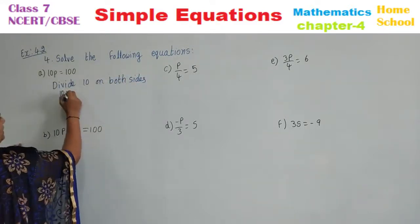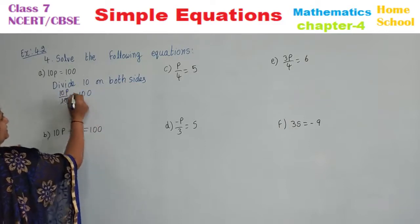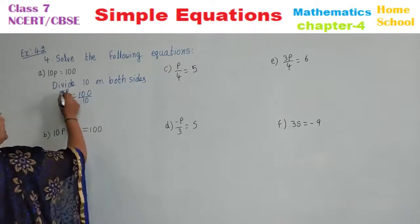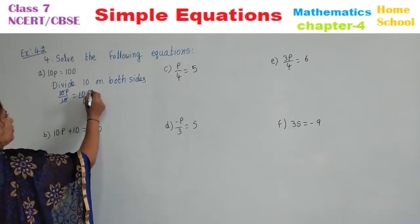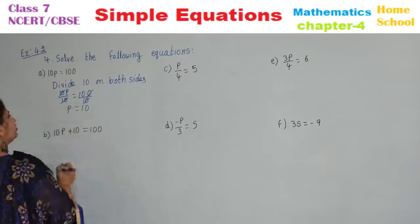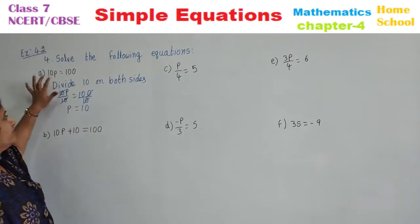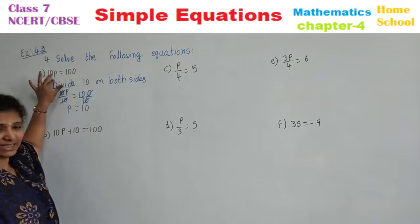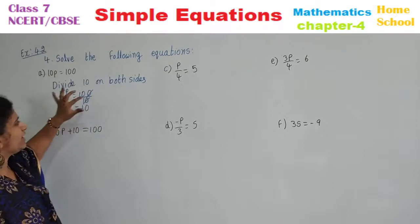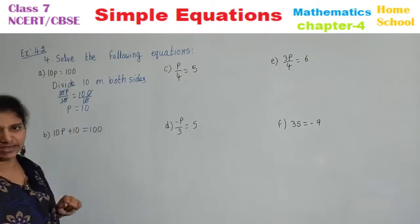10 and 10 cancel. 10P by 10 is equal to 100 by 10. The zeros cancel out. Therefore P is equal to 10 is your answer. So here 10 is multiplied — we have divided with that 10 on both sides. 10P by 10 is equal to 100 by 10, and P is equal to 10.